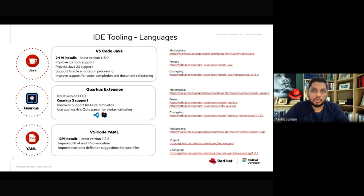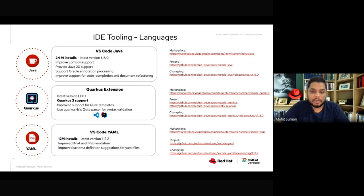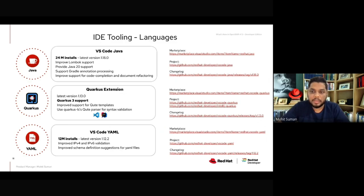The idea is to make sure we do consistent releases based on feedback from the upstream community and also based on the release of OpenShift 4.13. The specific links for the marketplace, GitHub repositories, and changelogs with the specific releases are mentioned in the deck. Feel free to look at them, and reach out to us with any specific feedback — we'll be happy to take care of feature requests and enhancements.